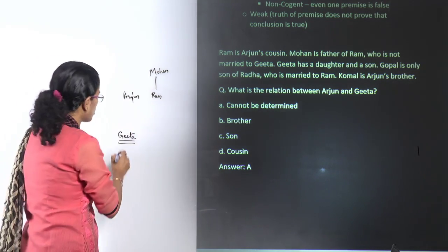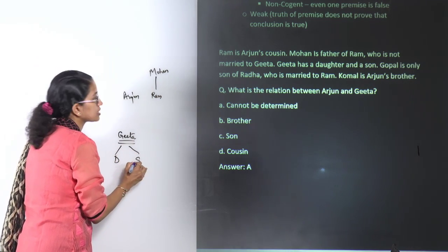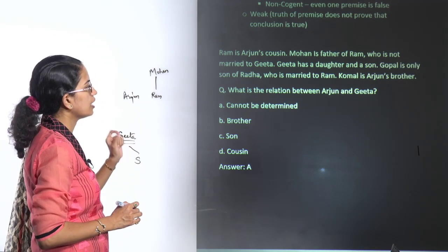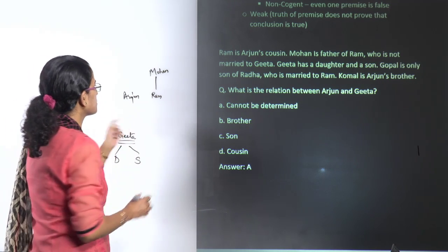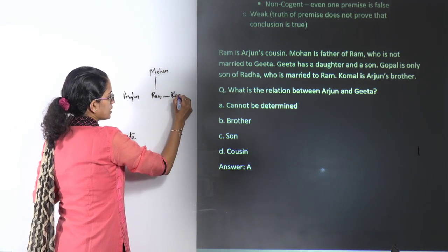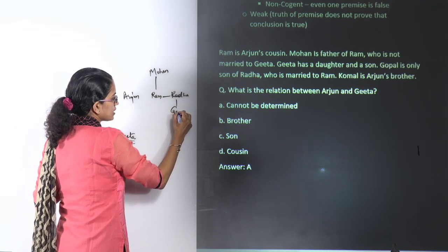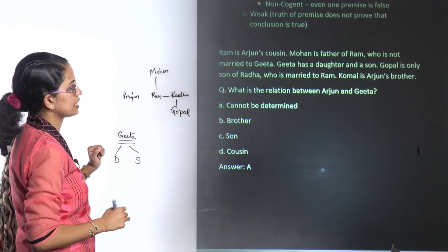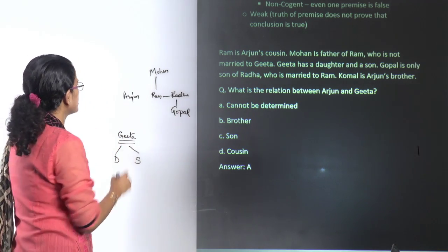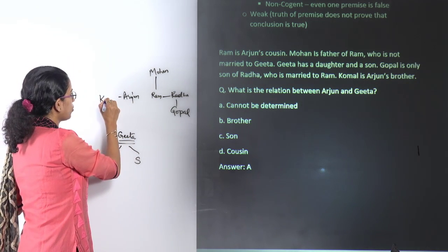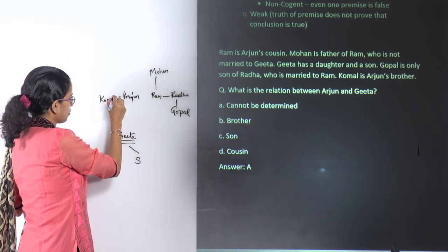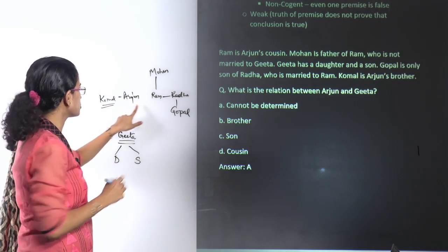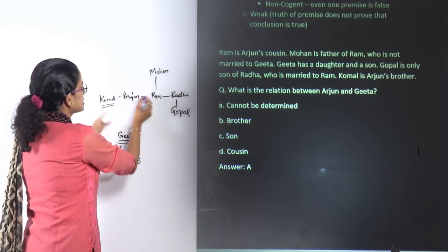Gita has a daughter and son. Gopal is the only son of Radha, who is married to Ram. So Ram is married to Radha and the son of Radha is Gopal. The next statement says Komal is Arjun's brother — Komal is a feminine name but is the brother of Arjun. So all three are brothers.